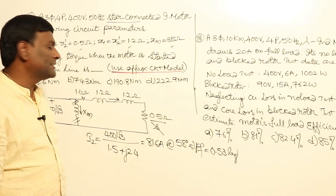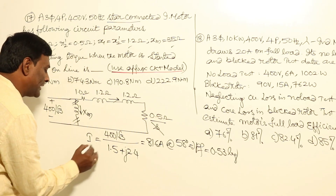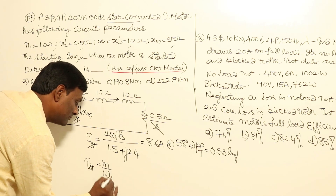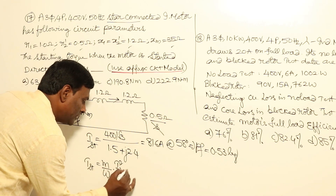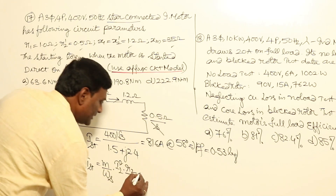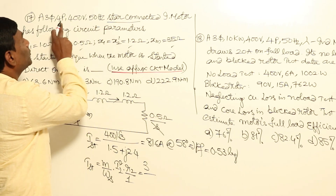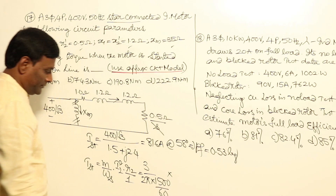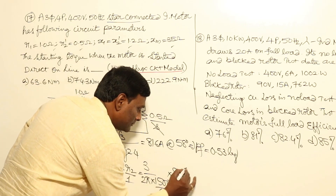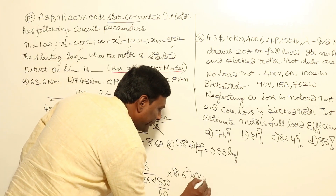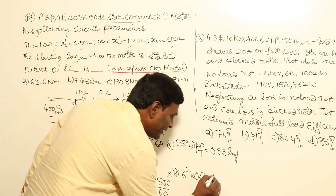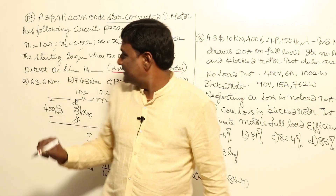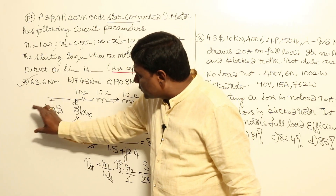The starting current I2 equals 81.6 A. The starting torque is: T_start = (3 / ωs) × I2² × (R2/S). With S = 1 and 4-pole, 50 Hz motor, Ns = 1500 rpm, so ωs = 2π × 1500/60. T_start = (3 / ωs) × 81.6² × 0.5, giving an answer of 63.58 Nm.